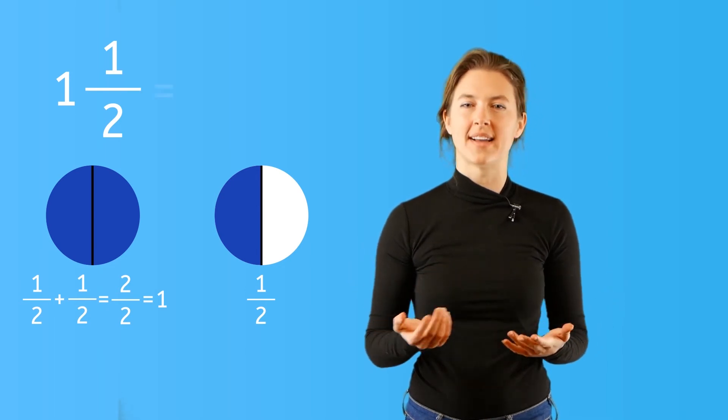If we look at the picture we've created, we also see that we have one whole circle and one half left over. Interesting. One whole and half, we just created a mixed fraction, one and a half. This mixed fraction represents the same value as the improper fraction three halves, or three over two.